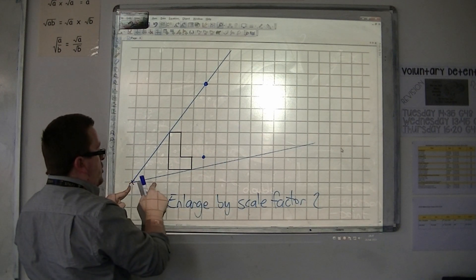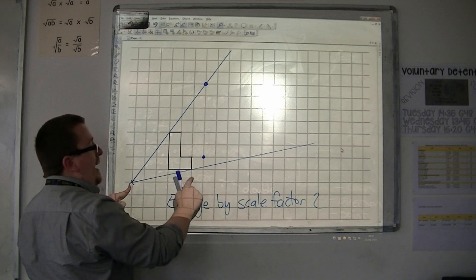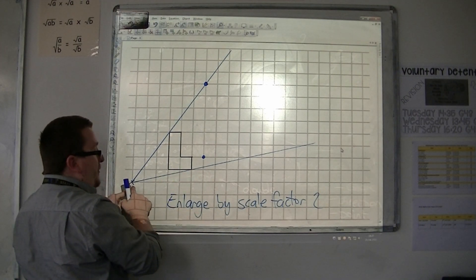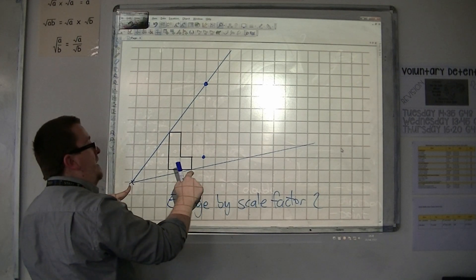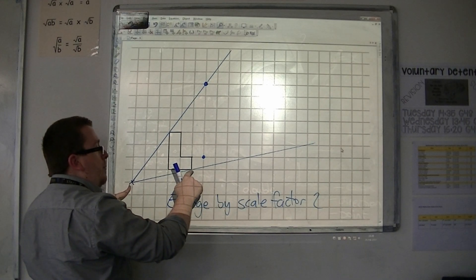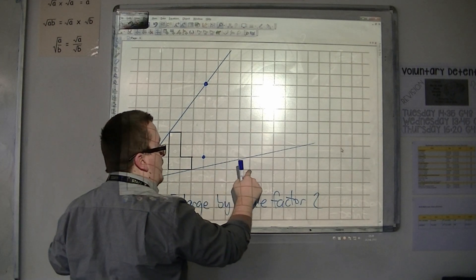This point is five along and one up. So it's always from the centre of enlargement, along, then up. So five along, one up.